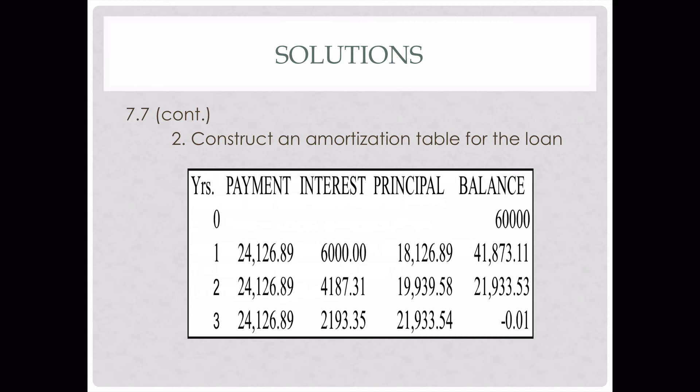For our final year, we calculate the interest once again — that's 10% of our new balance — and we get $219.34. When we subtract that from our payment we get $2,193.55, and when we subtract that from our balance, we get approximately a penny off. Your balance for your final year could be a dollar or two off — it's all rounding, depending on how you're plugging your numbers into your calculator, so it's never going to be exactly zero. If you ever have a real loan, your last payment is actually a couple dollars more or less than your other payments, and that's because of rounding.